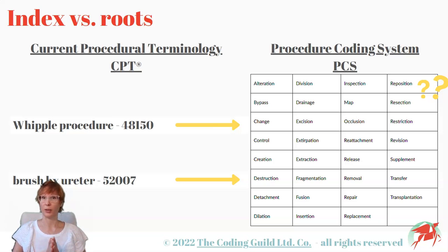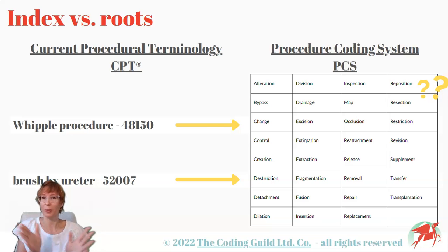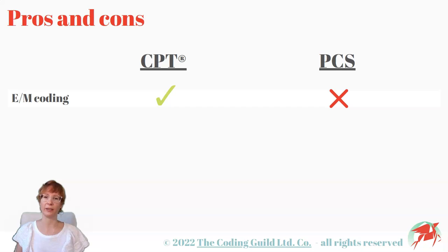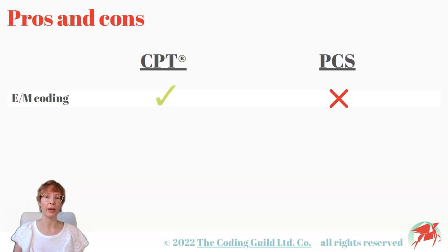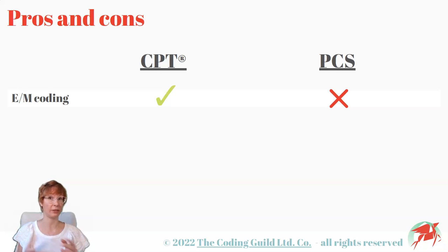But don't worry, PCS is not all bad. There are a lot of aspects where CPT is way worse than PCS can ever be. There are several features in CPT not found in PCS and vice versa. First of all, PCS does not code for evaluation and management services, which describe the mental effort a physician exerts while examining and assessing a patient. A lot of people dislike coding for these services because the guidelines can be confusing and there are just way too many E&M codes altogether. Not having to do this in PCS is definitely a plus.